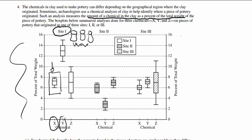And you look at chemical Y for the same pottery and you get this box plot, and you look at chemical Z and you get this box plot. And you are repeating the process for sites 2 and 3, and these are the graphs that you obtain.